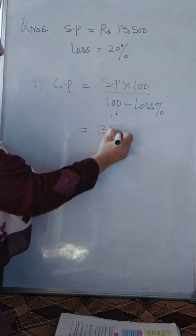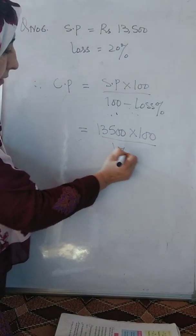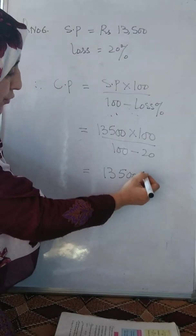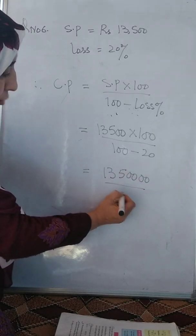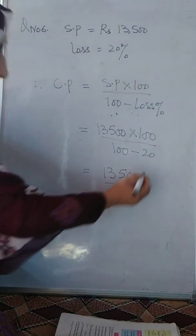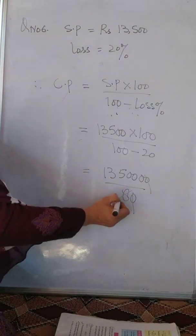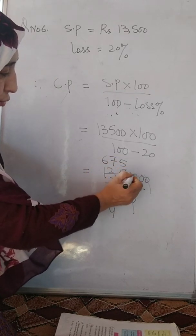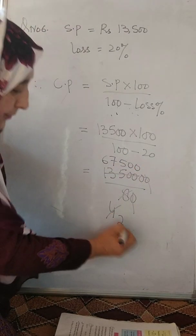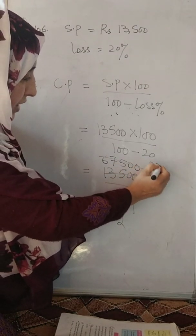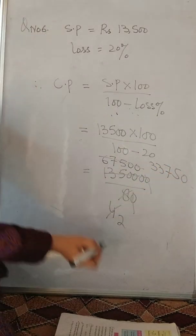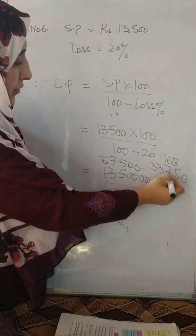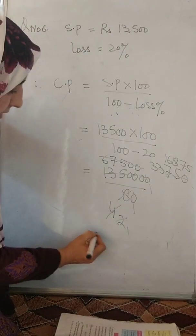CP haiin thirteen thousand five hundred into karengi hundred by hundred minus twenty. Thirteen thousand five hundred into hundred. Hundred maisee minus karengi twenty. Wohu nikalee ga eighty. Yahaan par iski cancellation kaartate hain. Yee zero or yee zero cancel kaartate hain. Aap karengi two se cancellation. Iske baad or two se kerngi. Three two se kerngi. The calculation continues with division steps, resulting in 16,875.